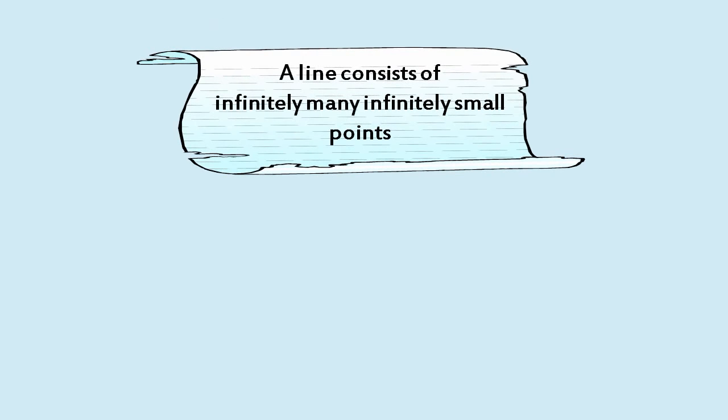An imagined abstract line consists of infinitely many imagined abstract points. And since we believe we can imagine it, we accept it to be true.